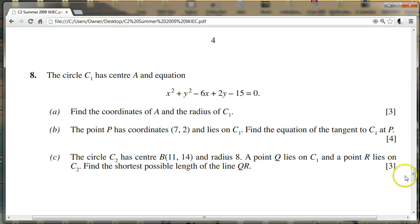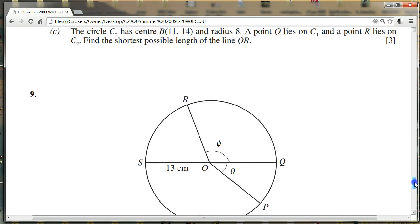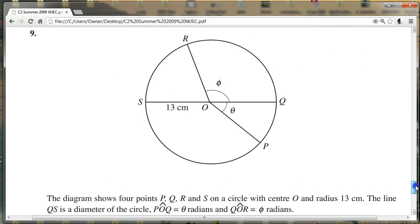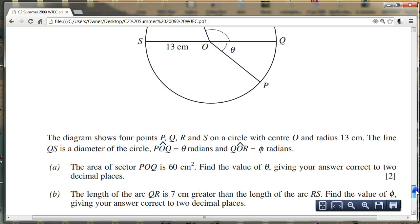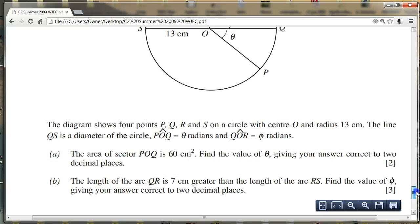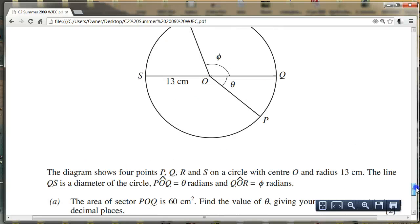And again, it's a very easy question. So eight's nice and easy. Nine is easy, looks hard, but it's only sectors, arc lengths, areas, and such like. So that's an easy question as well.